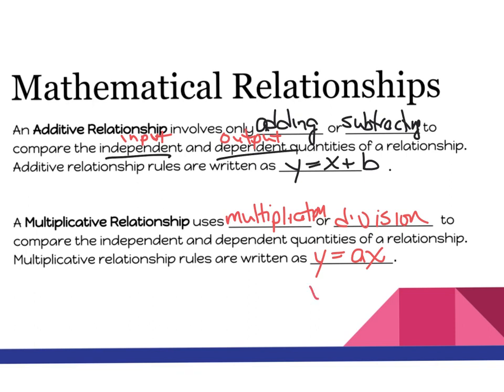Sometimes you'll also see a multiplicative relationship written as y equals x over a, with a being the number you're dividing by. Also, for the additive relationship, you can also see it written as y equals x minus b. We're going to be looking at different examples over the next few days so you'll be able to identify an additive relationship or a multiplicative relationship.